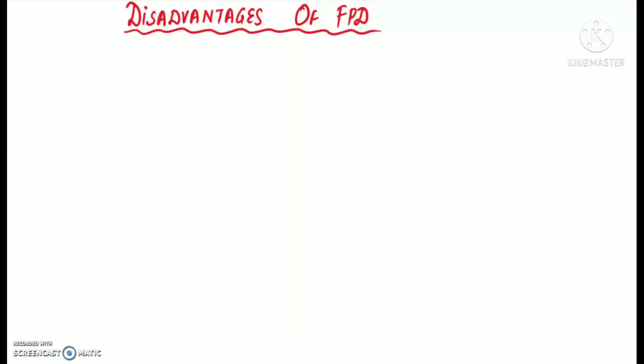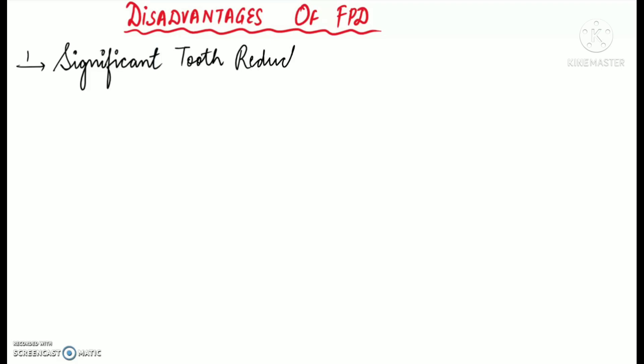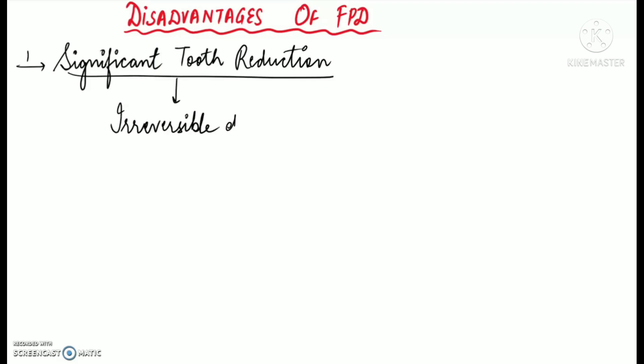Now let's talk about the disadvantages of FPD. Most of the disadvantages of fixed partial dentures occur due to poor techniques followed during tooth preparation. A major shortcoming is that FPD involves significant tooth reduction of the abutments, which may have irreversible effects on the pulp and periodontium.